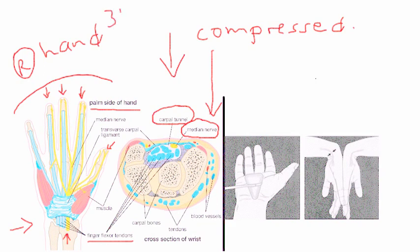They describe this as the classic three-and-a-half finger distribution of pain and paresthesia. The reason is obvious, because the median nerve innervates those three and a half fingers.